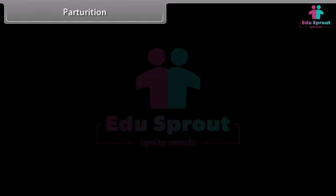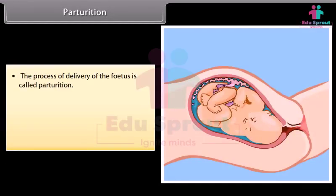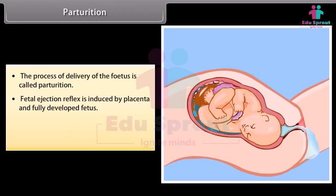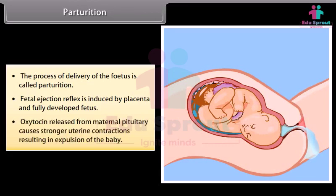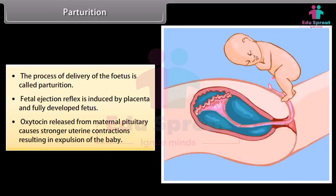The process of delivery of the fetus is called parturition. Fetal ejection reflex is induced by the placenta and the fully developed fetus. Oxytocin released from the maternal pituitary causes stronger uterine contractions, resulting in expulsion of the baby.